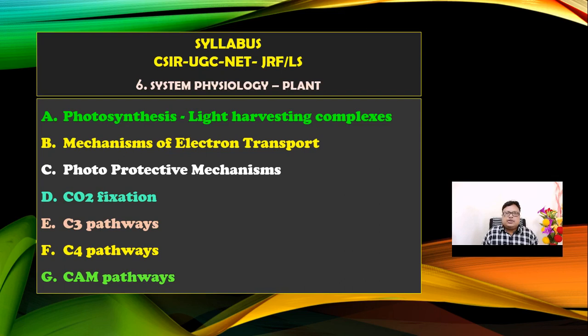The life sciences topic consists of different types of units. Unit number 6 is regarding system physiology, that is plant physiology. Two physiologies are there — animal and plant physiology. The basic heart of plant physiology consists of CO2 fixation. Points under photosynthesis include light harvesting complexes, mechanism of electron transport, photo-protective mechanisms, C3 pathway, C4 pathway, and CAM pathway. Let us discuss these one by one.